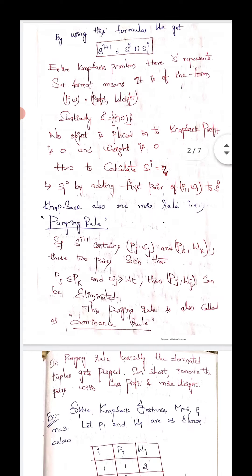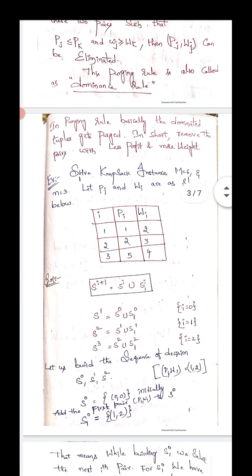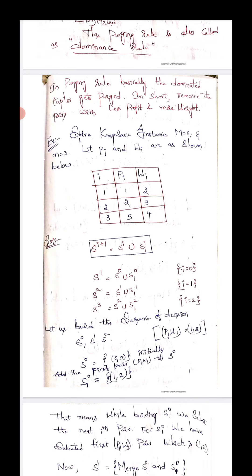In the purging rule, basically the dominated tuples get purged. Simply stated: remove the pair with less profit and more weight. This is a very important point — remove the pair with less profit and more weight. Those pairs are to be removed.